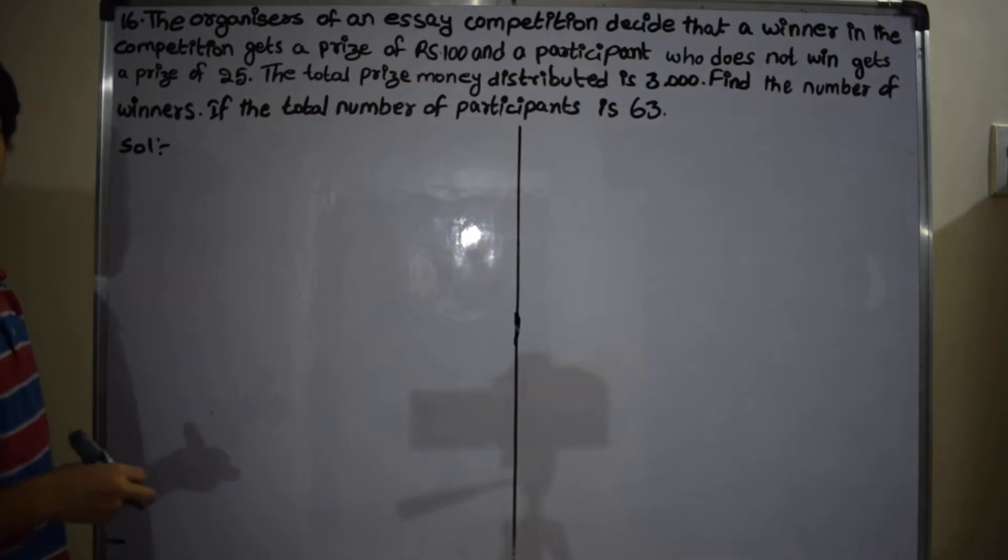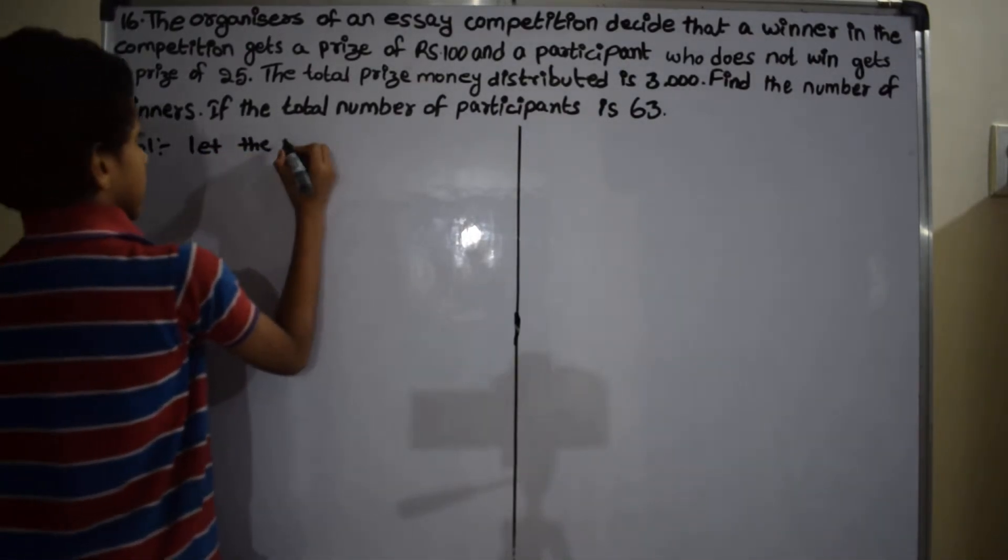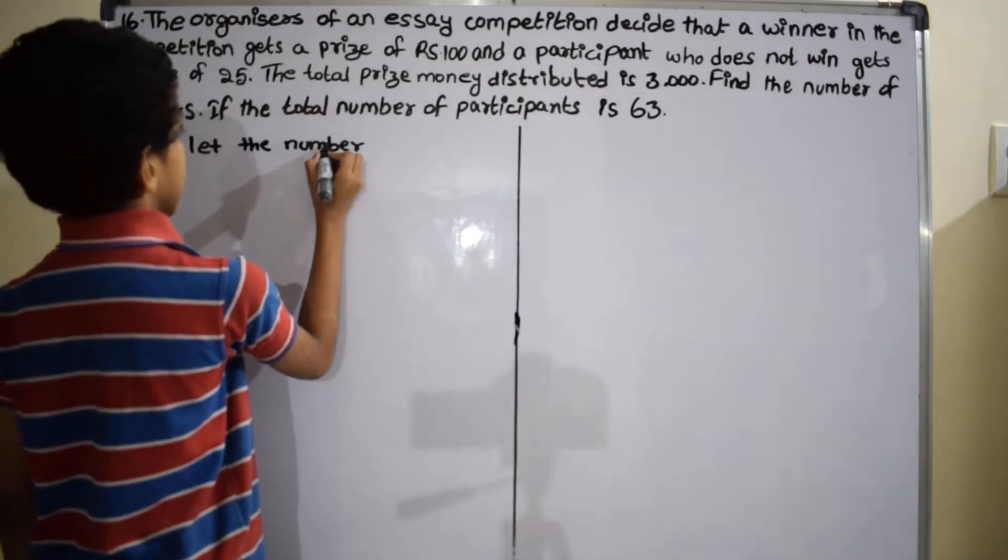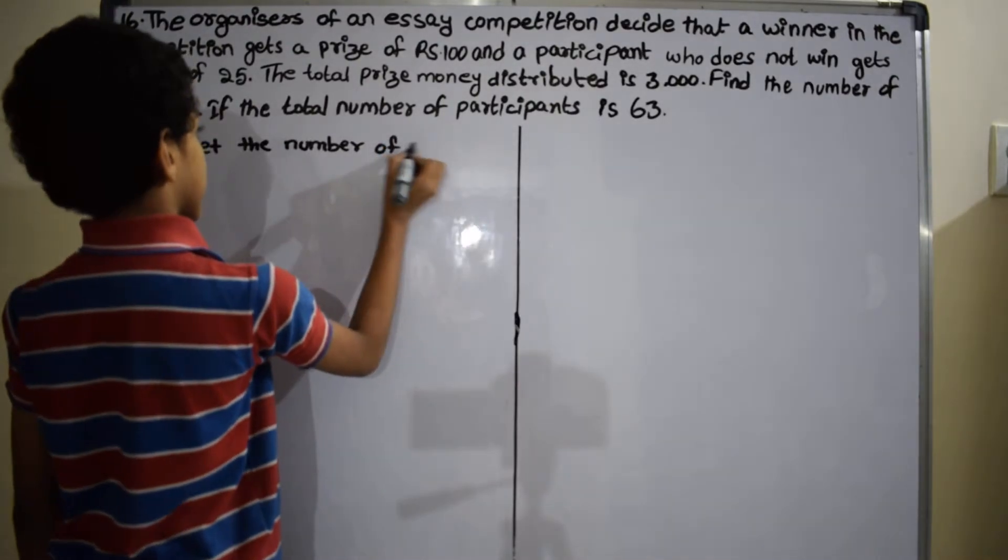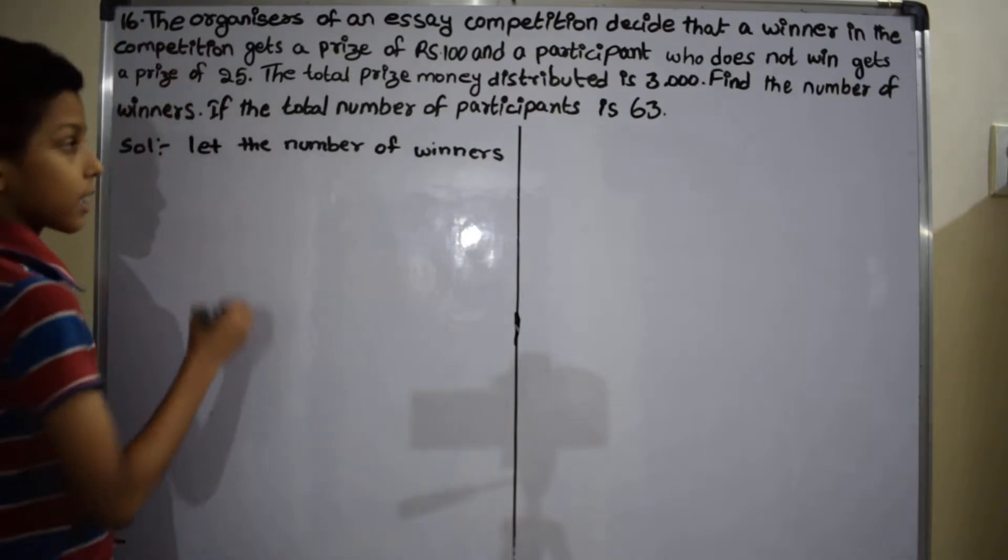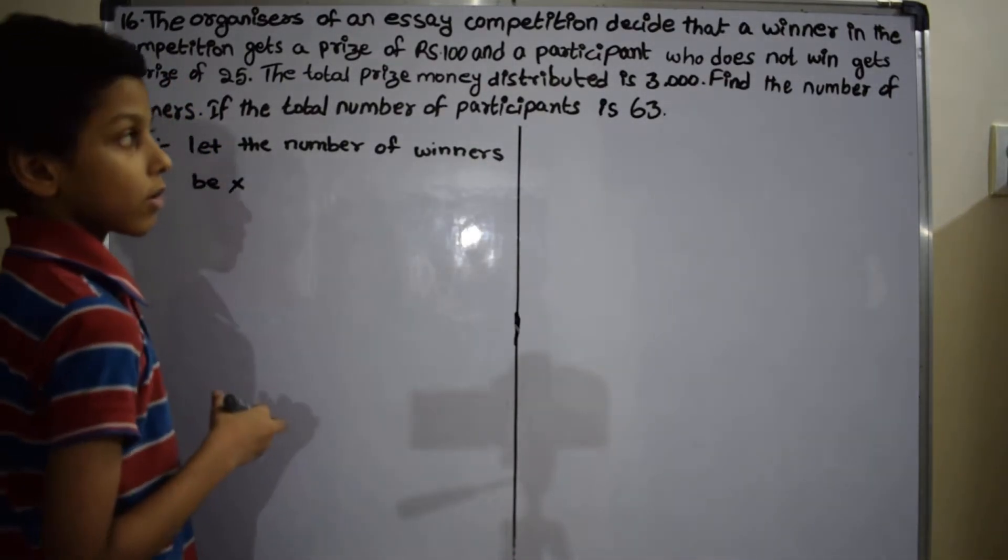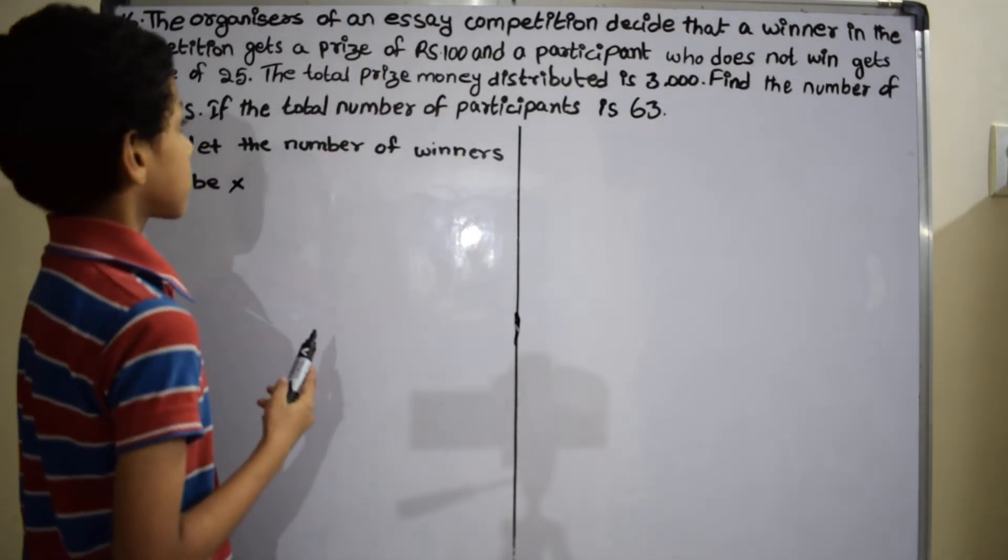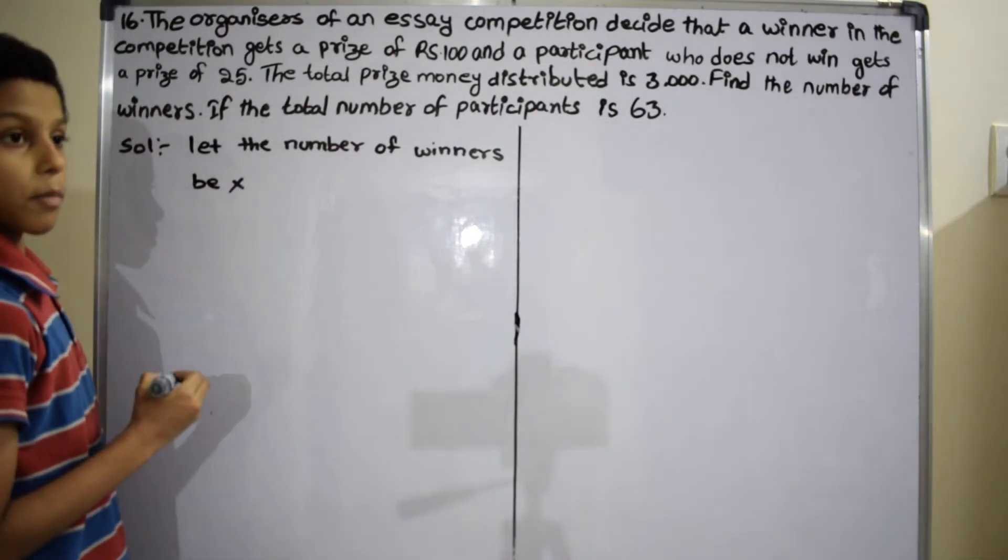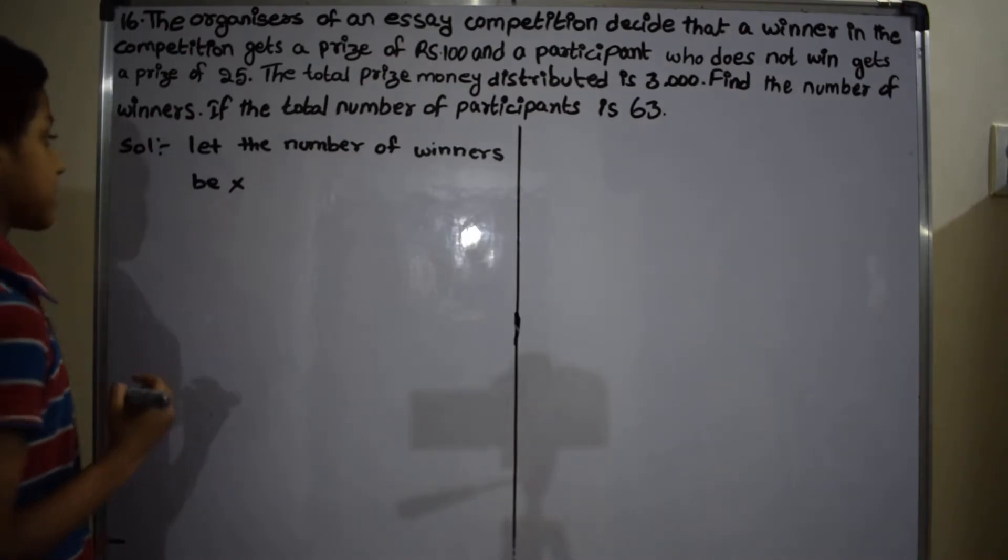Let the number of winners be x. According to the given problem, the total number of participants is 63. Then the number of persons who do not win equals 63 minus x.